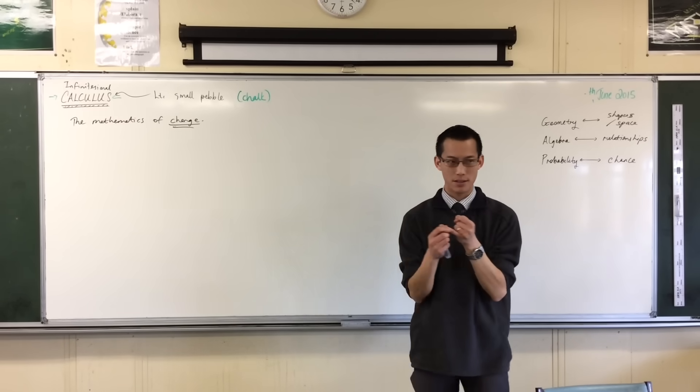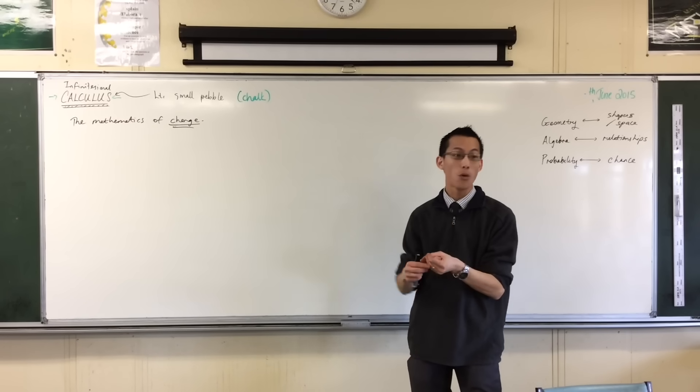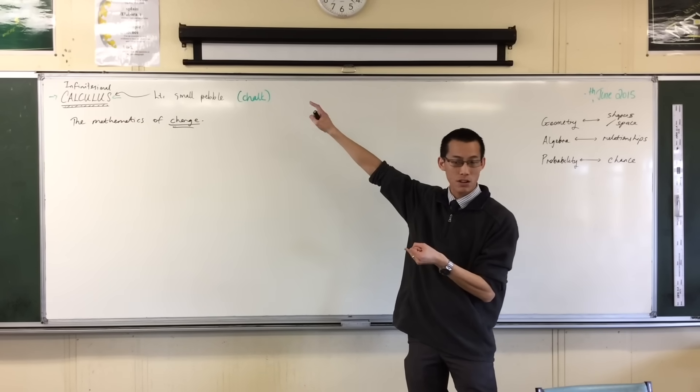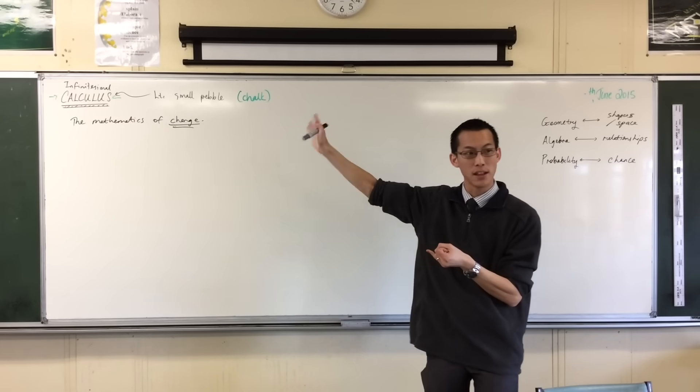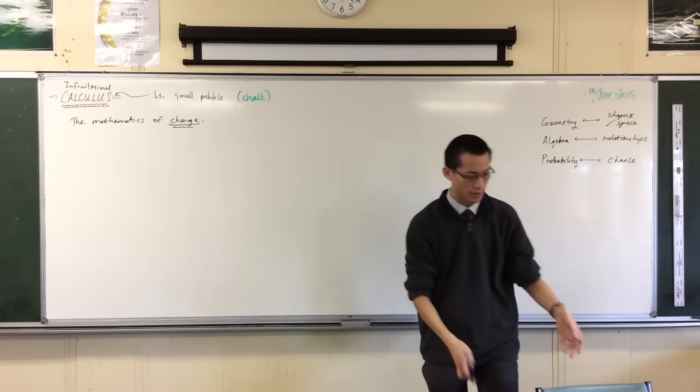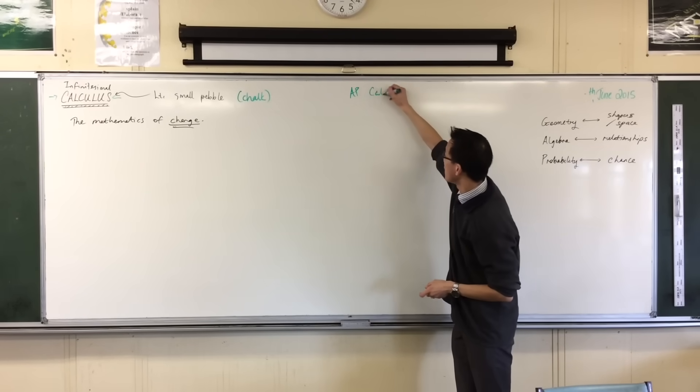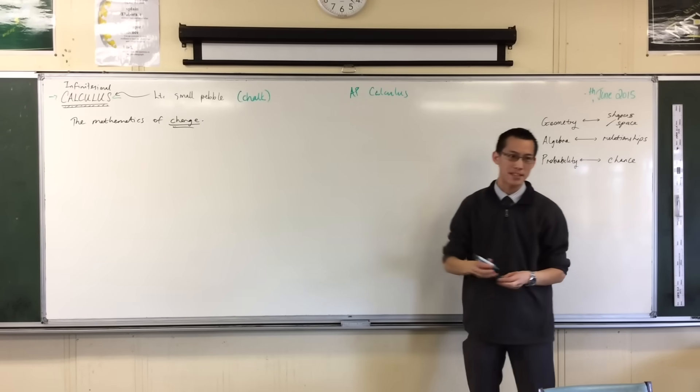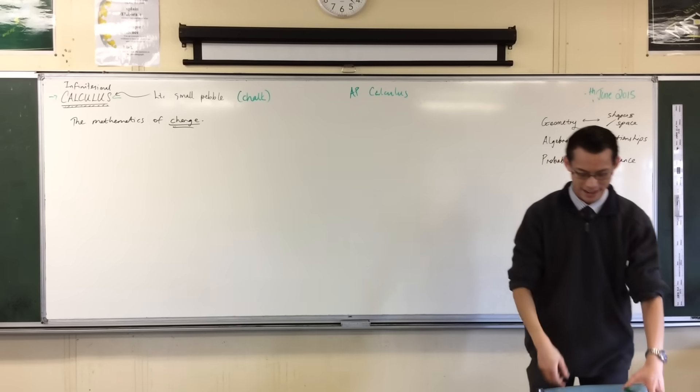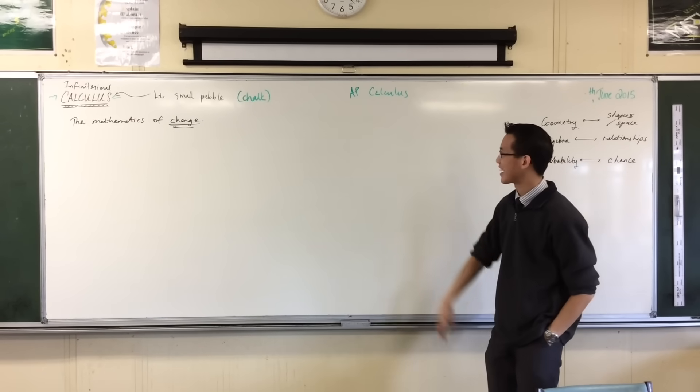In fact, number one, the preliminary nature courses that you're doing, mathematics and mathematics extension one, are called the calculus courses. They're a good seventy to eighty percent plus calculus and its subtopics. In fact the equivalent of what you guys are learning in America is called AP Calculus. The AP stands for advanced placement. It means you guys are serious about your maths.